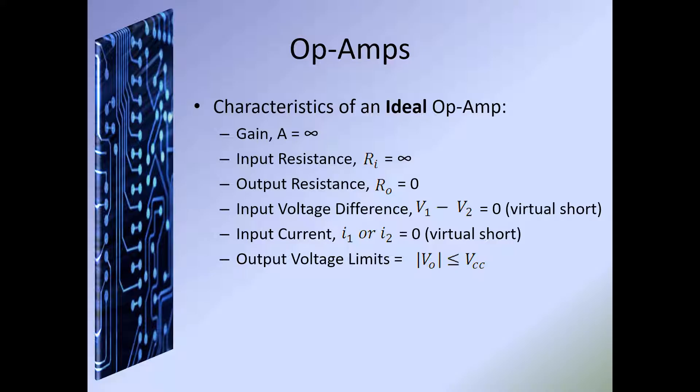The characteristics of an ideal op amp — and the key word here is 'ideal,' meaning no limitations on the output. But we know there are limitations. When op amps were first being designed, the goal was to come as close to ideal as possible. This means our gain, represented as A, would be infinite — which we know is impossible, as we'll see when looking at the other characteristics.